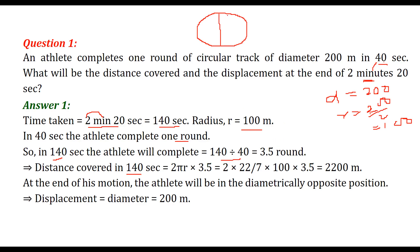Distance covered in 140 seconds is 3.5 multiplied by the circumference. The circumference of a circle is 2 pi r. So 2 into pi into radius 100, multiplied by 3.5 circumferences. That gives 2200 meters.